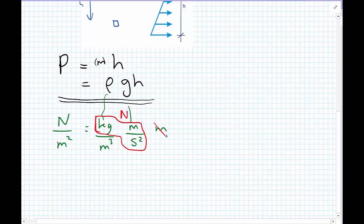This meter cancels with this to become meter squared. So we end up with newtons per meter squared. And so this statement P equals rho GH is dimensionally consistent.